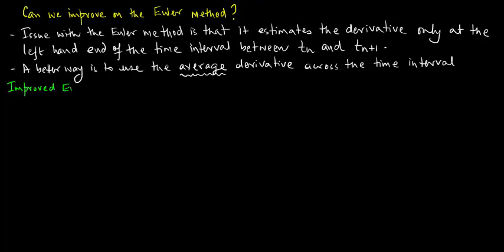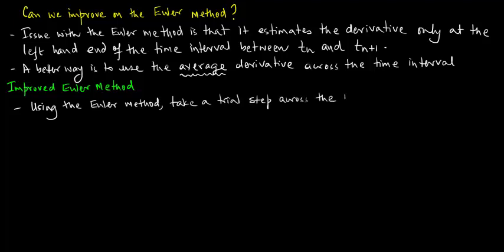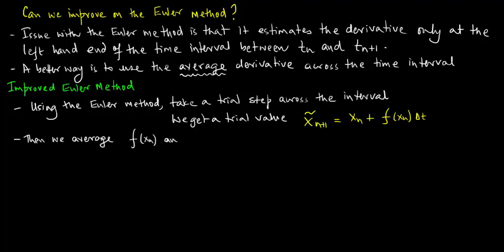Here's the improved Euler method. Using the Euler method, take a trial step across the interval to get a trial value x tilde n plus 1 equals xn plus f of xn times delta t. Then we average f of xn and f of x tilde n plus 1 and use it to make the real step across the interval.